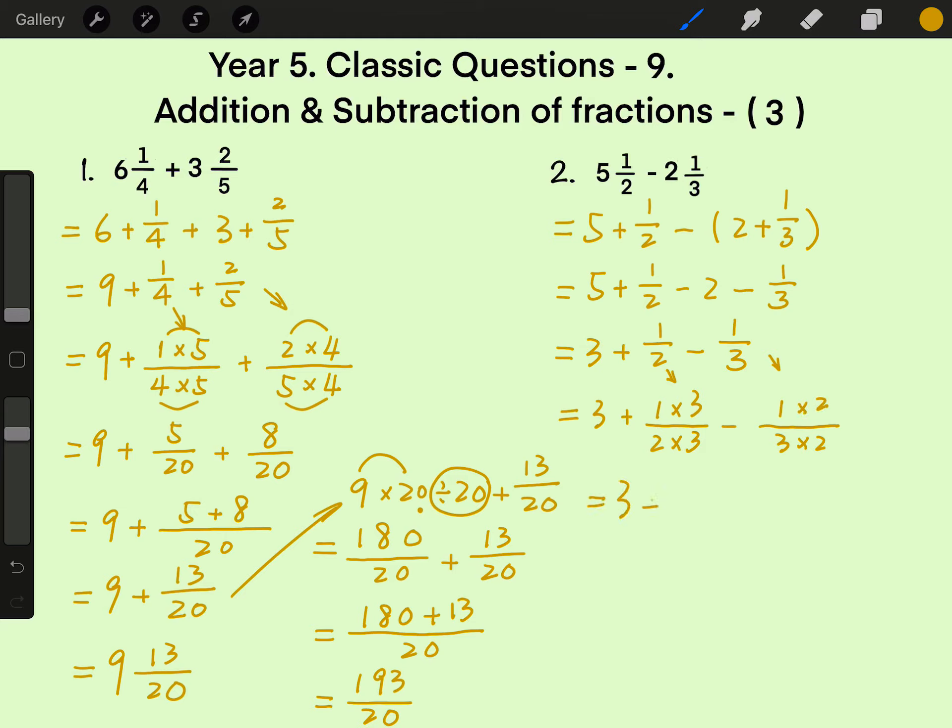3 plus 1 times 3 is 3, over 2 times 3 is 6, minus 1 times 2 is 2, over 3 times 2 is 6.